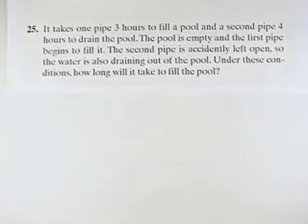It takes one pipe three hours to fill a pool, and a second pipe four hours to drain the pool. The pool is empty, and the first pipe begins to fill it. The second pipe is accidentally left open, so the water is also draining out of the pool. Under these conditions, how long will it take to fill the pool?